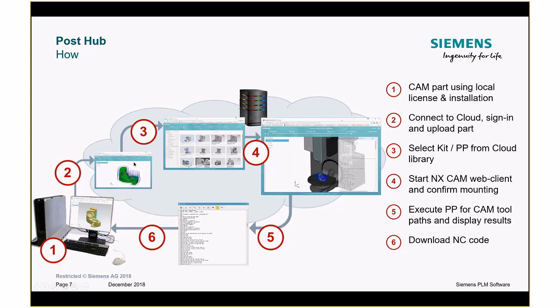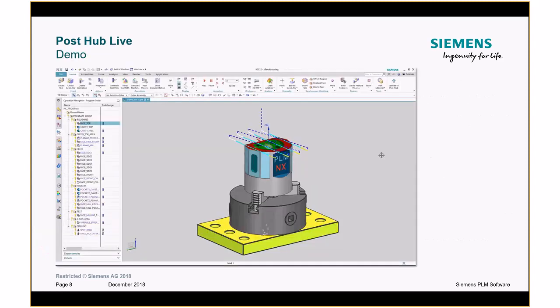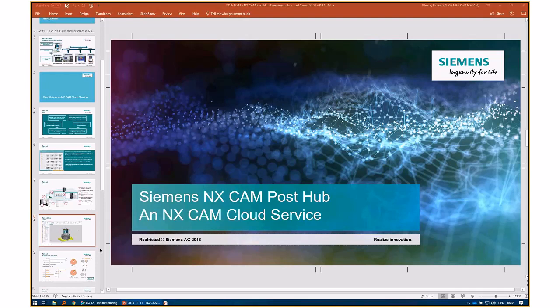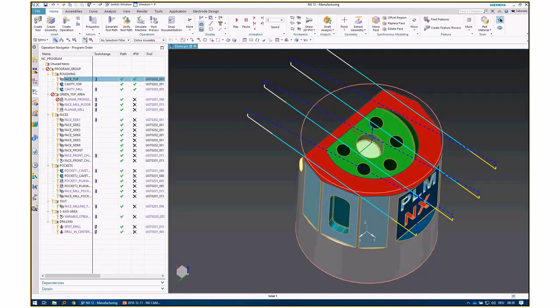Using PostHub is fairly easy. Fundamentally, you upload your part file to our web service, then select a machine kit you want to try out, click the post-process button, get your NC code, check if that's the code you're looking for, and if so, get in contact with the partner. I'll try a live demo - we did have a few technical problems this morning but I hope they're resolved.